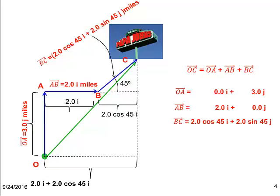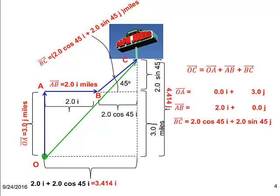To find Y components of resultant vector OC we can add Y components of the constituting vectors. Finally, we see that the X component of resultant vector OC is 3.414i and the Y component is 4.414j. Therefore the displacement vector of the car is 3.414i plus 4.414j miles.